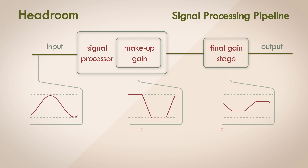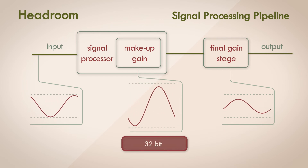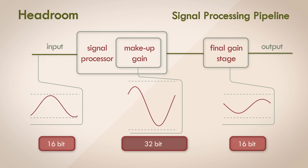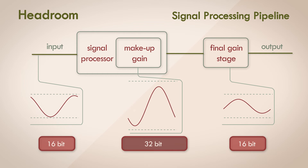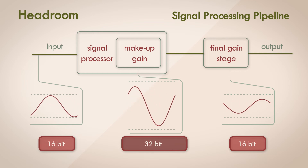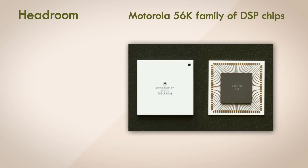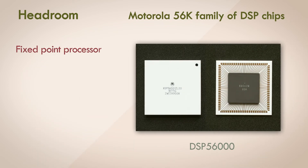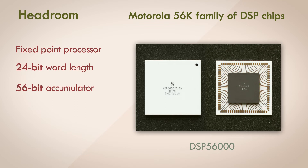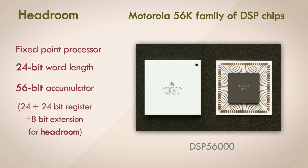Unless you could save the intermediate results in a larger register — this is pretty much what all fixed point DSP processors do. To avoid the problem, they have larger registers when performing calculations internally. For example, the 56k family of DSP chips produced by Motorola is called 56k because the accumulator used to hold and accumulate values during operations on 24-bit audio is 56 bits in length. So it's fair to assume there is enough dynamic range and headroom within these processors in the intermediate stages.